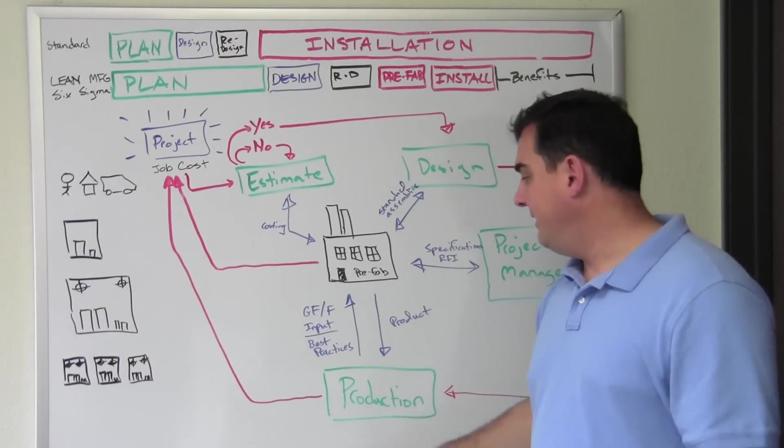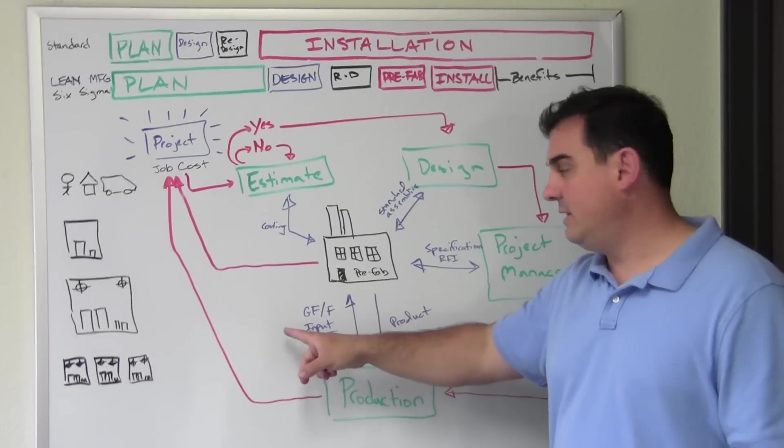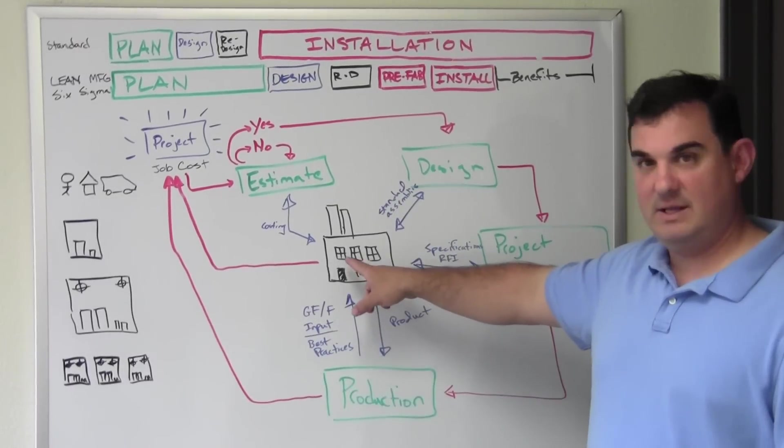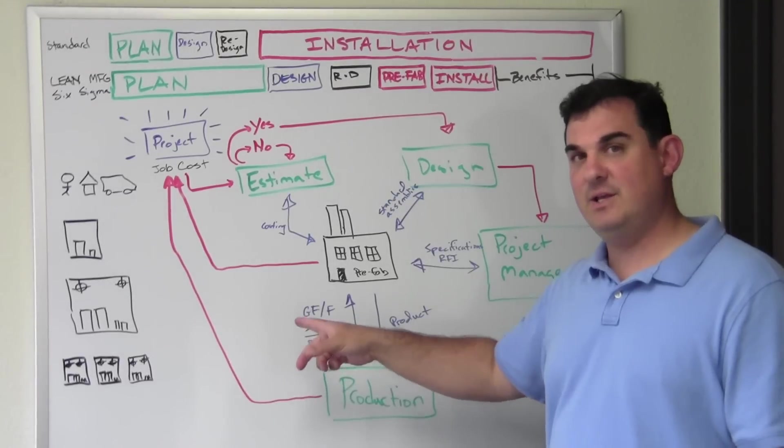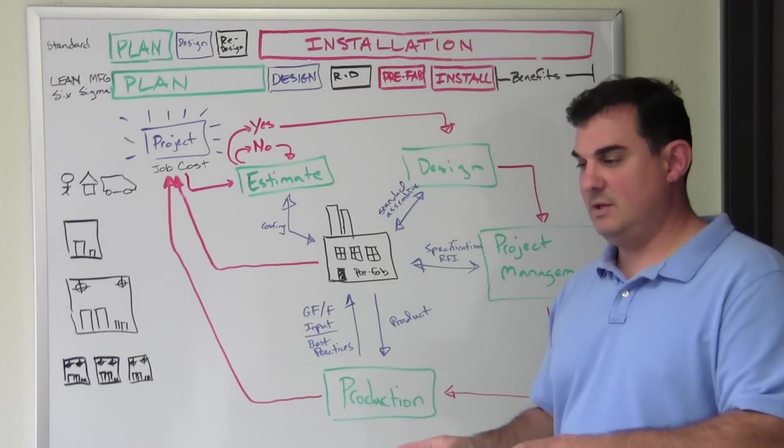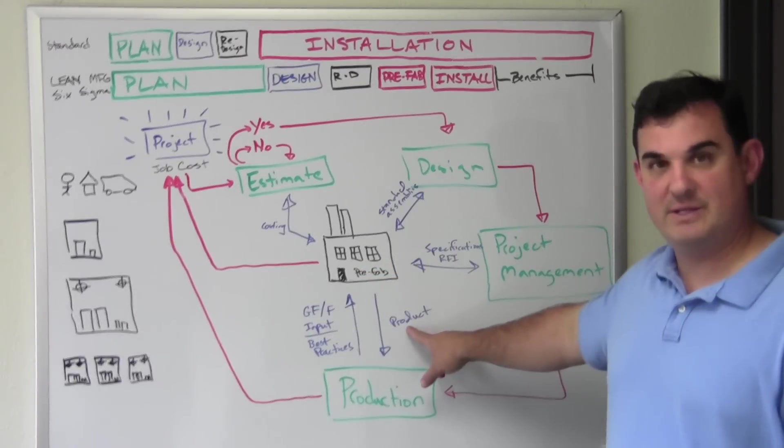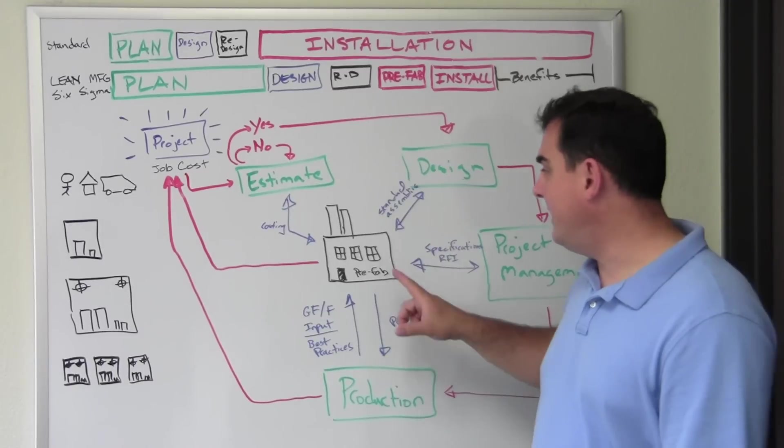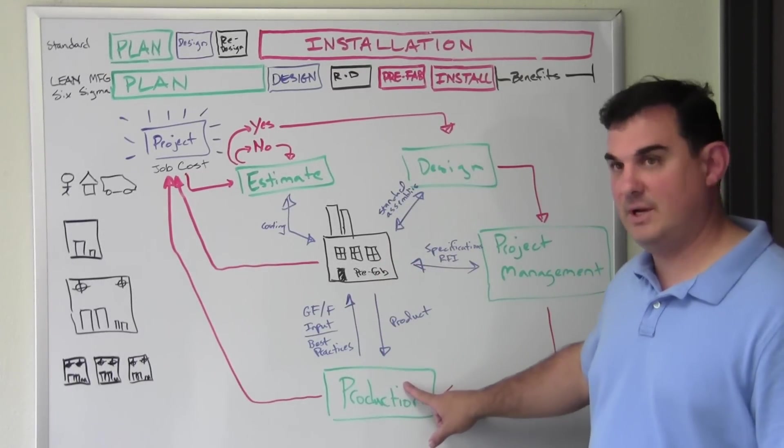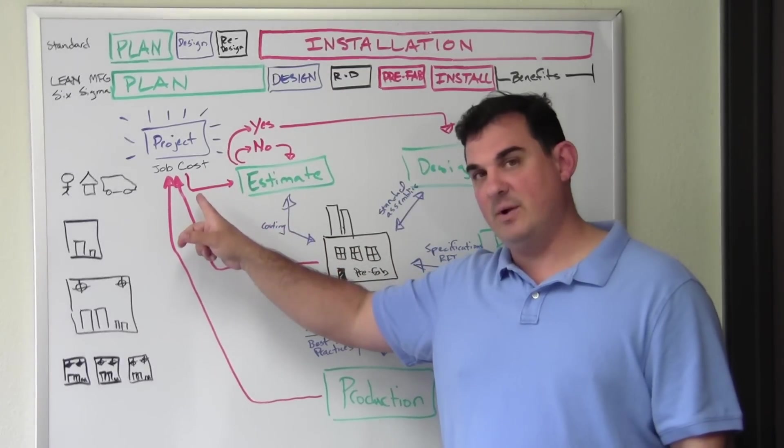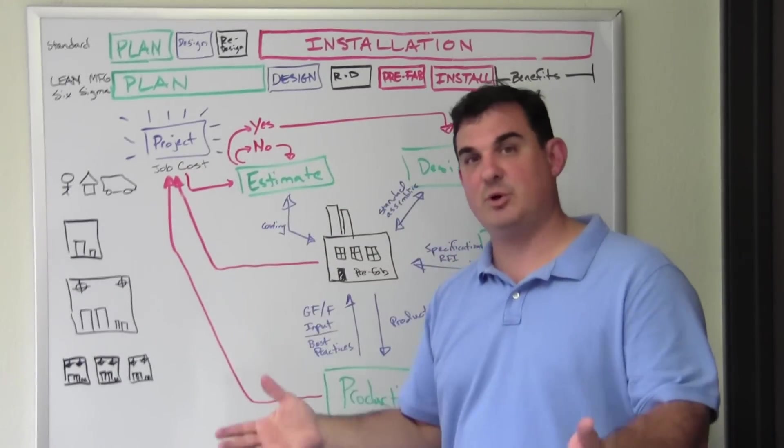And finally, in your production phase of the job, your general foreman or foreman are inputting into the prefabrication process the best practices that they use and the differentiations from project to project in order to create the best product. From that, the cost for prefab and the cost for production are input now into the system so that the estimators can come up with a better number for the next project.